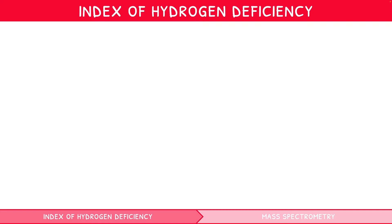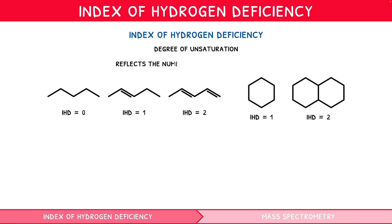This rule is known as the Index of Hydrogen Deficiency, or degree of unsaturation. It is a formula which outputs a number reflecting the number of double bonds or rings within an organic species. It is defined as 2N plus 2 minus H divided by 2, where N is the number of carbons and H the number of hydrogens.